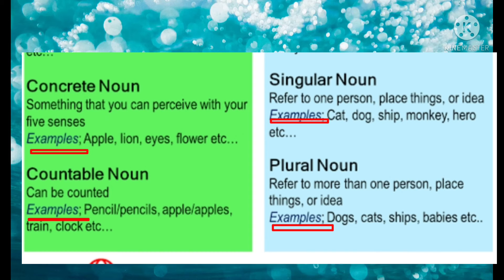Next, plural noun — referred to more than one person, place, thing, or idea. Examples: dogs, cats, ships, babies, etc.